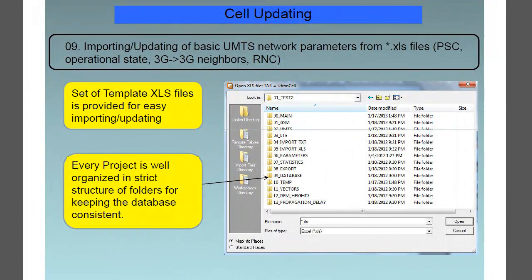On to feature number 9, which is the importing and updating of basic UMTS network parameters from the spreadsheet files, including the PSC, the operational state, the 3G to 3G neighbors, and RNC. For the easy importing and updating, the whole set of template XLS files is provided, and it's worth noting that every project is organized into a strict structure of folders for keeping the database consistent.